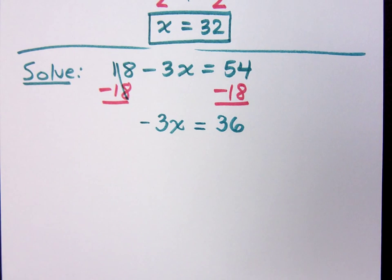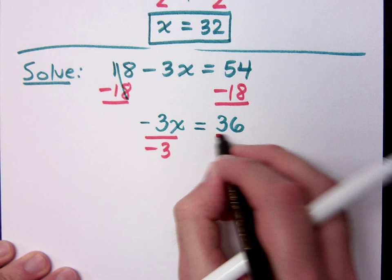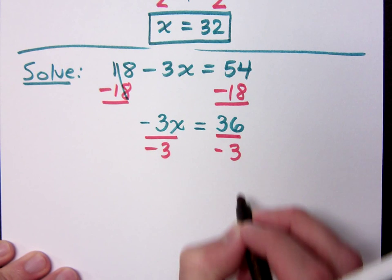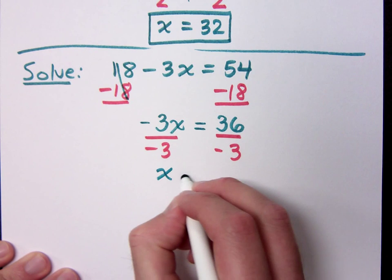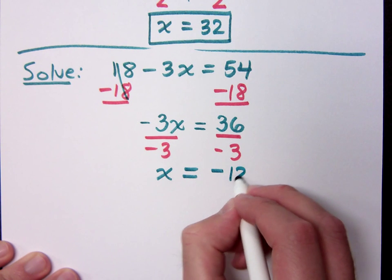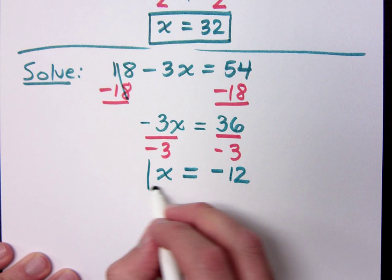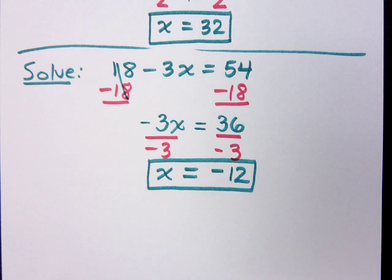Bring it home — finish it. You divide by negative 3 on both sides. Do I divide by the x? No — just the coefficient of negative 3. And then we have x equals negative 12. Questions about that one? Awesome.